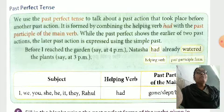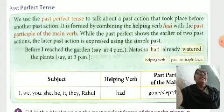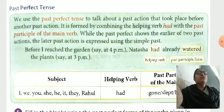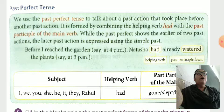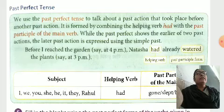While the past perfect shows the earlier of two past actions, the later past action is expressed using the simple past. For example: Before I reached the garden, Natasha had already watered the plants.